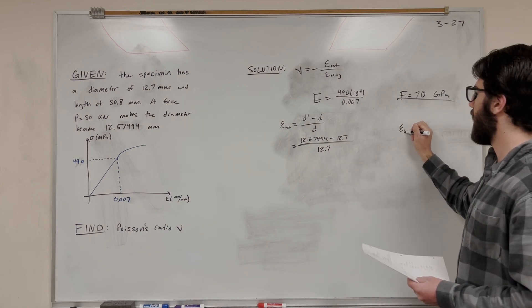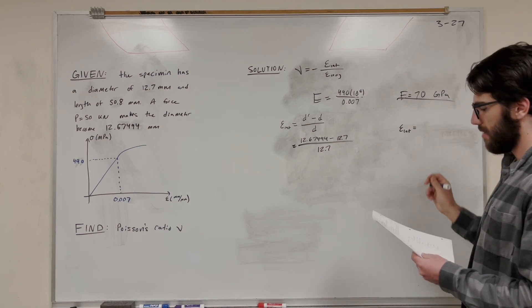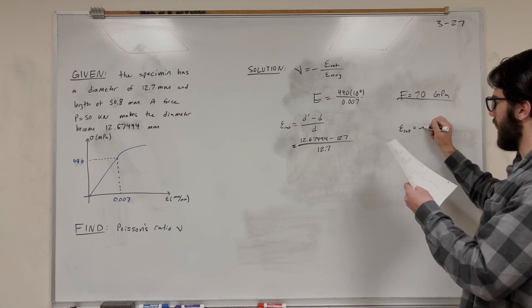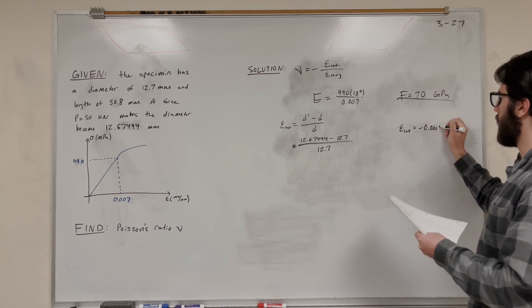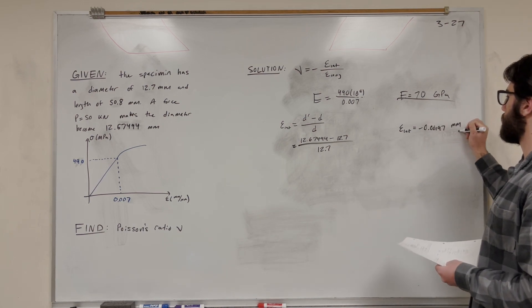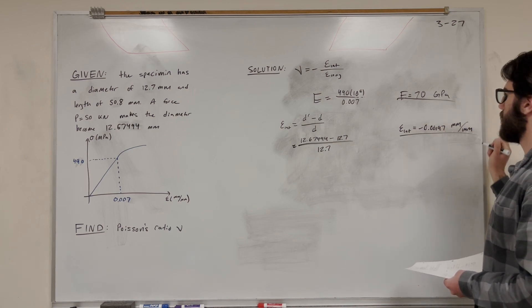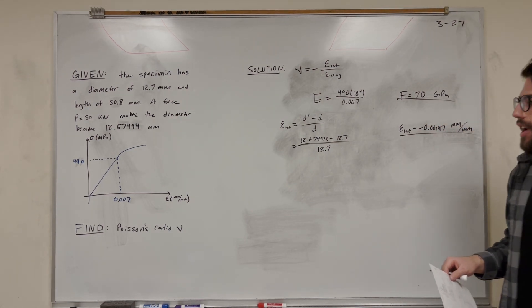So with this, you get that the lateral strain is going to be equal to negative 0.00197 millimeters per millimeter. Cool. So then all we need to find is the long strain.